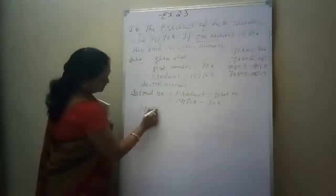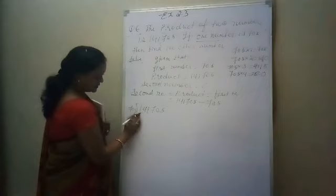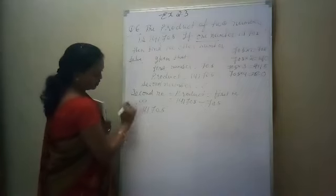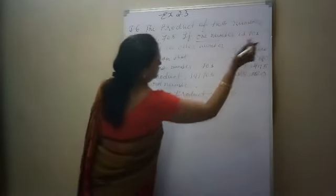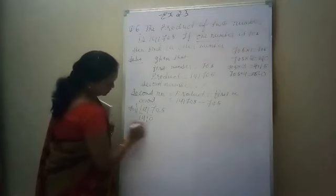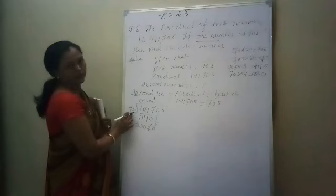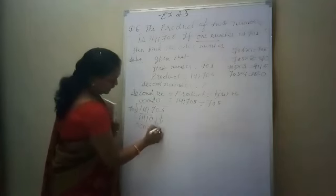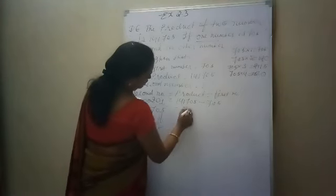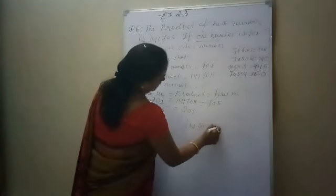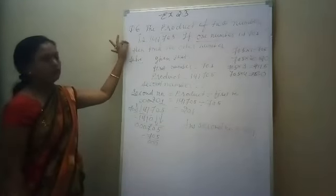Now divide 1,41,705 by 705. The first 4-digit number 1417 — it comes in the double of 705: 2 times 1410. So answer digit is 2. Then 70 — not divisible by 705, so write 0. Then 705 — comes 1 time. So what will be the answer? 201. That is our second number — it is 201. I hope you understood question number 6, which is the word problem.